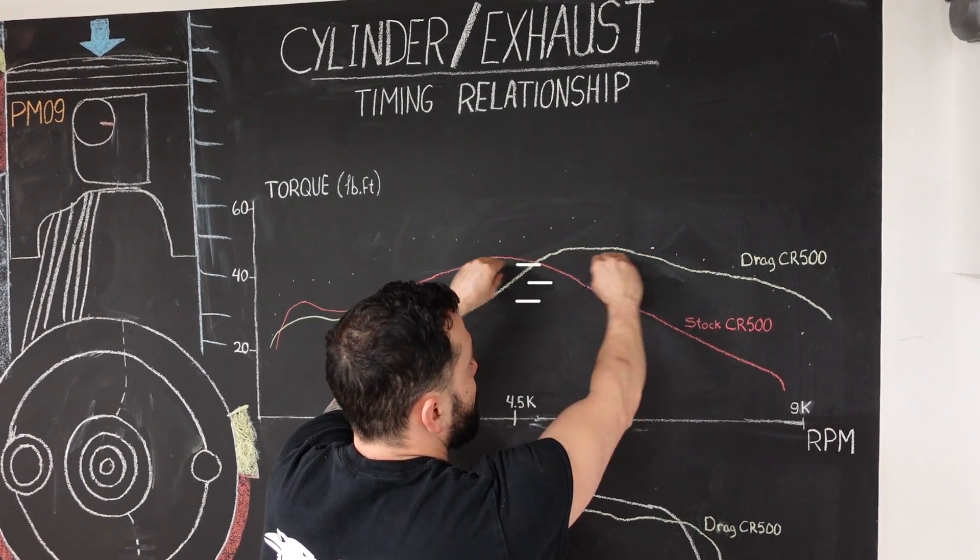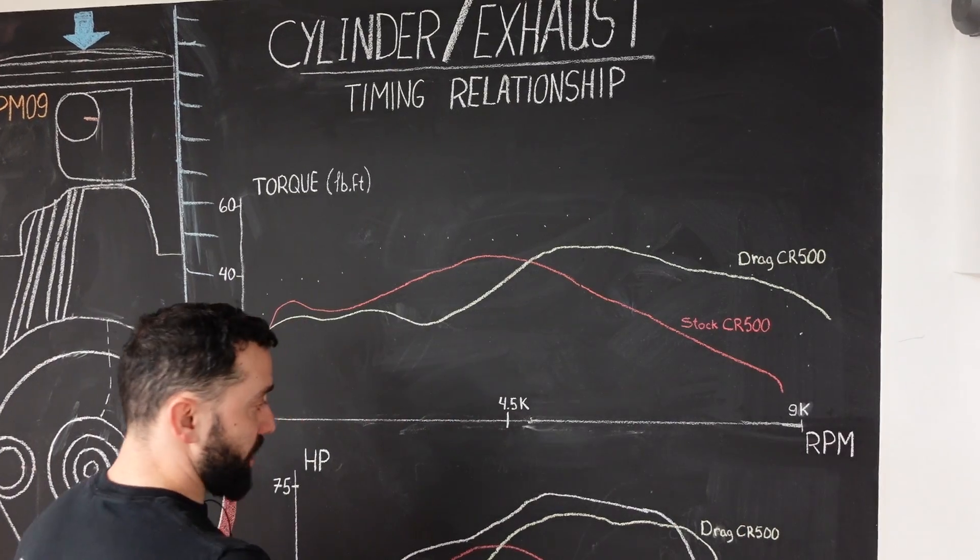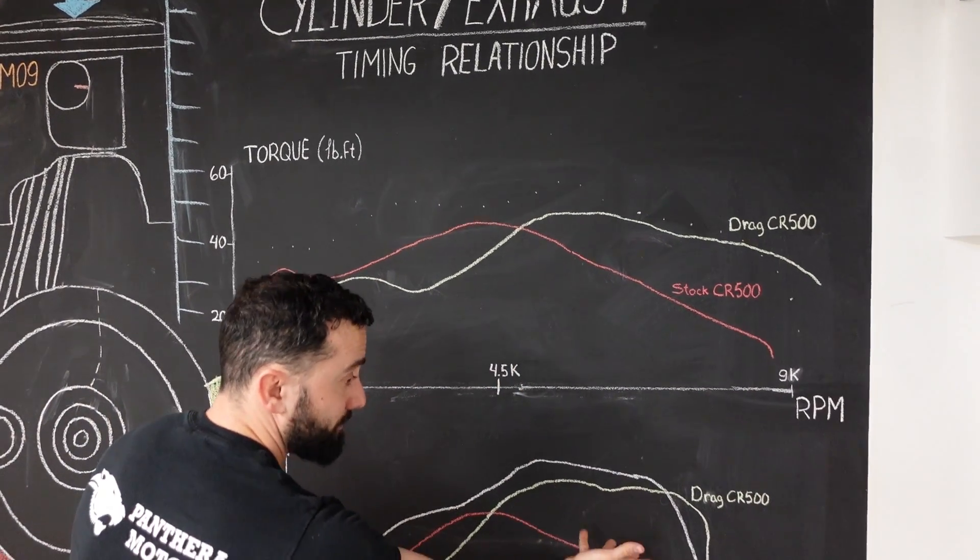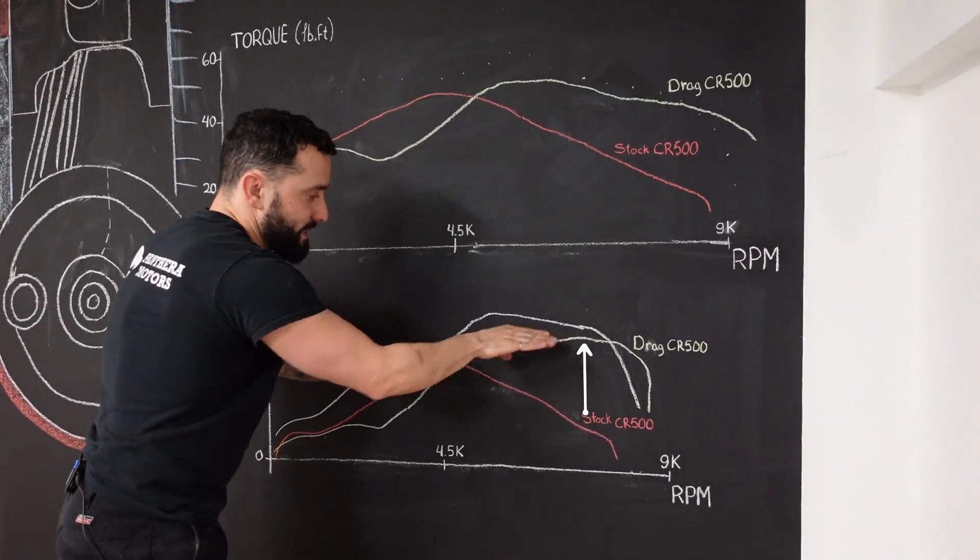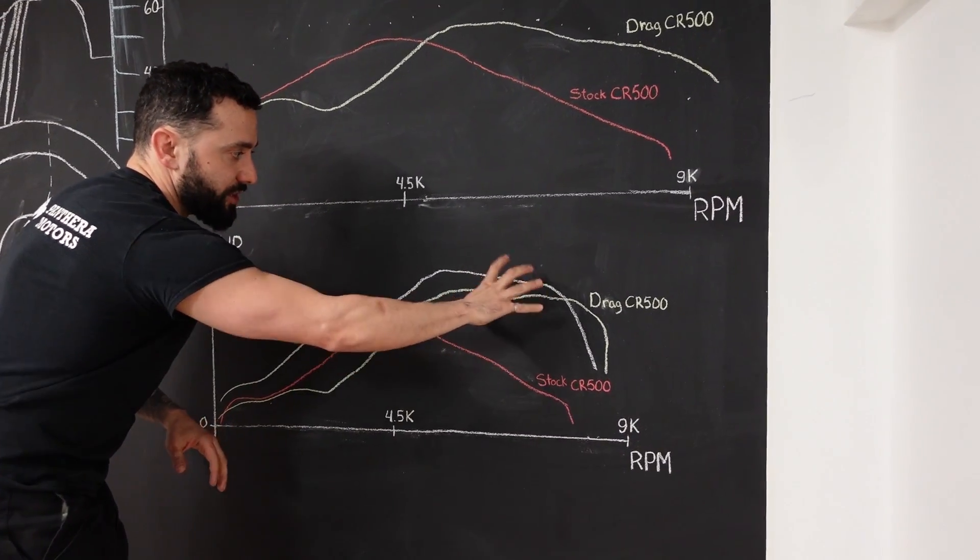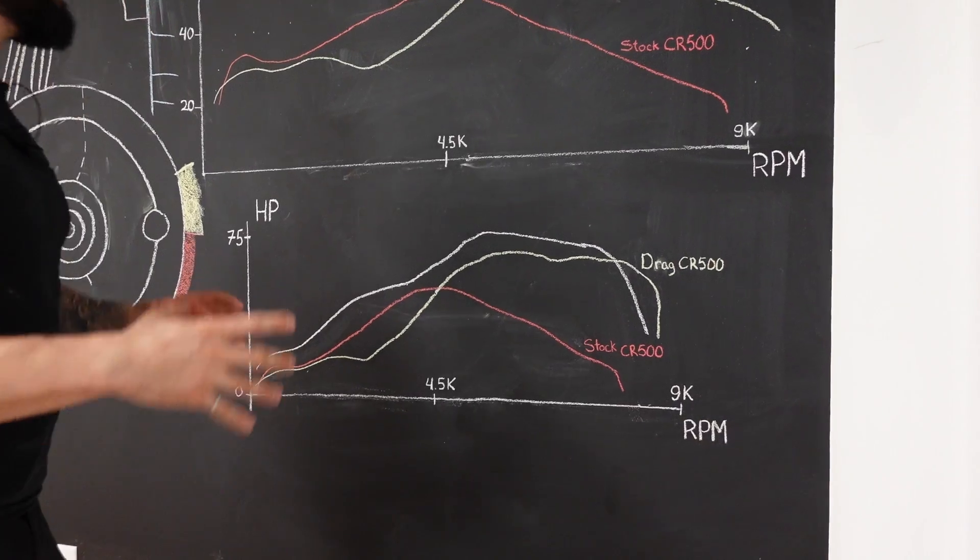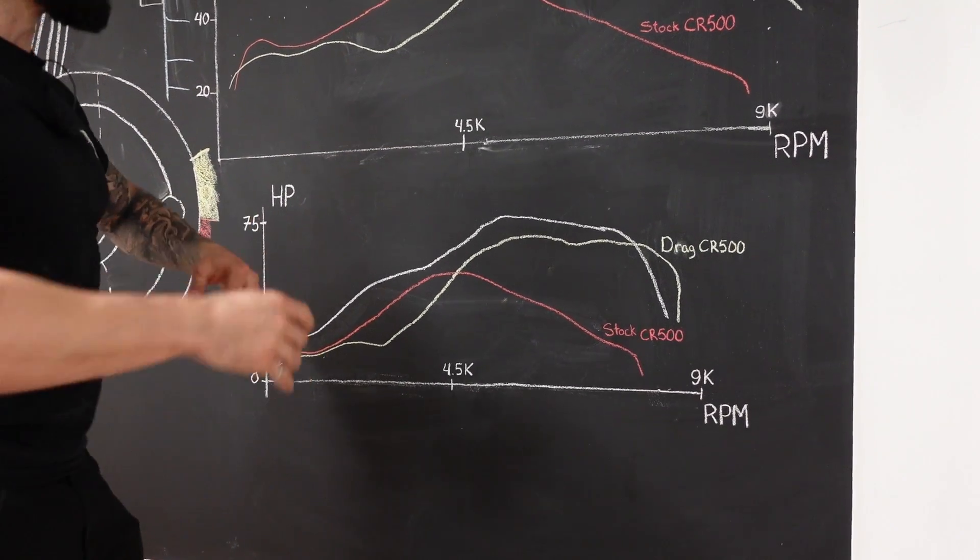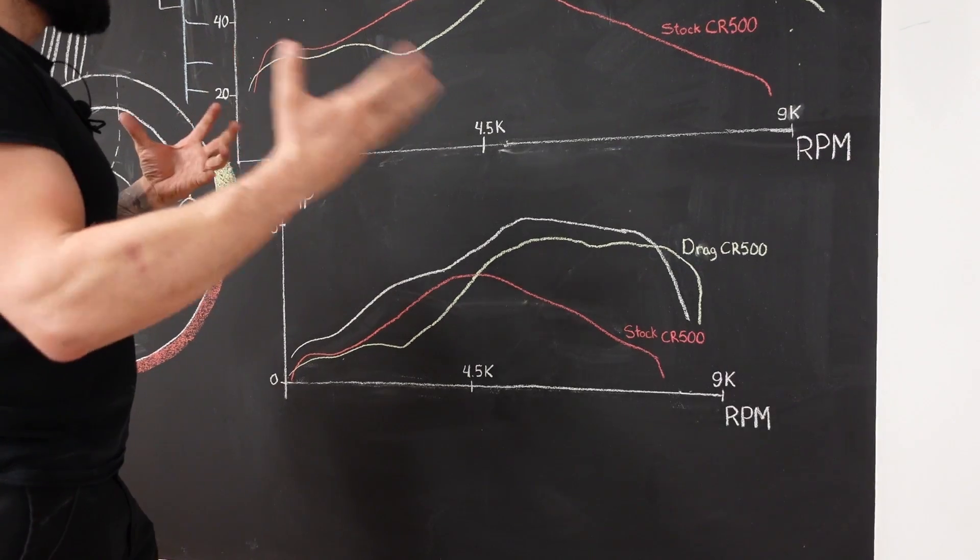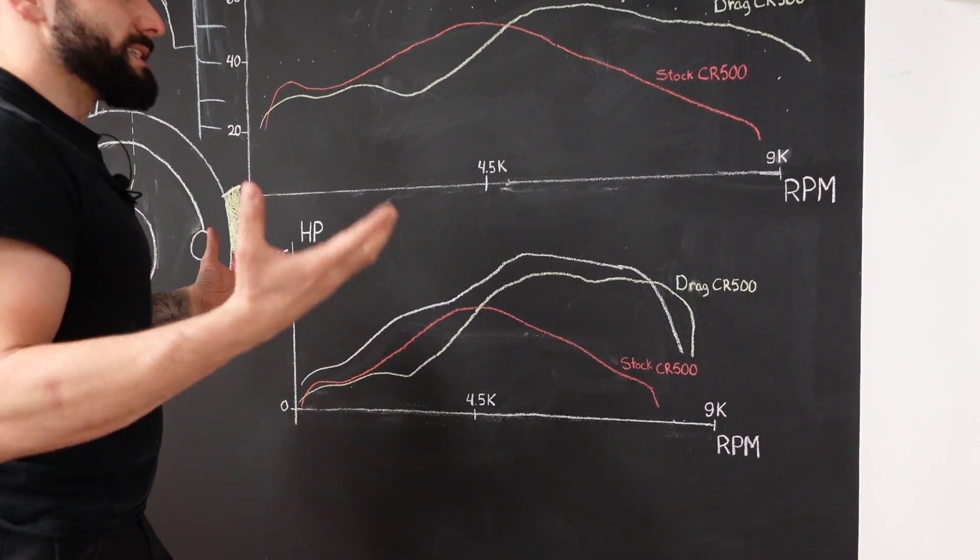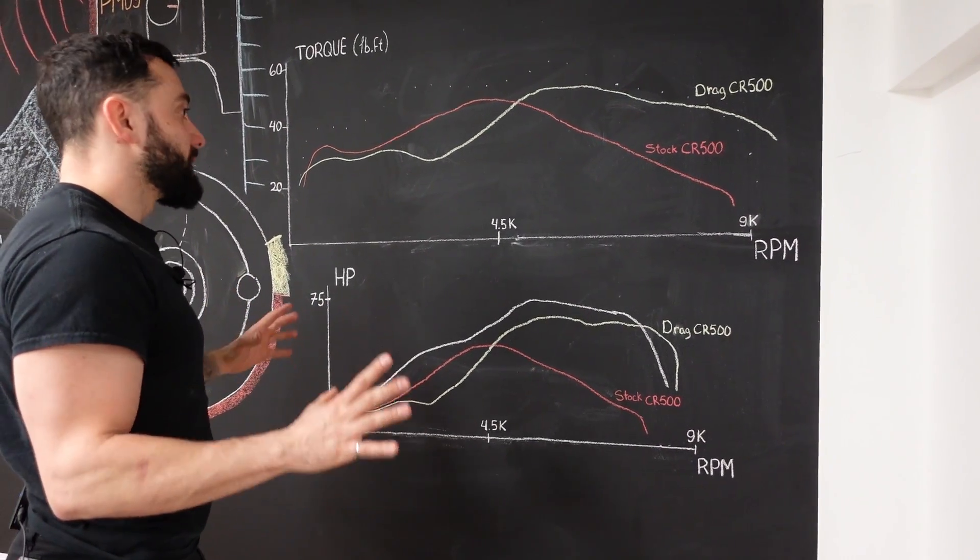Since horsepower is, like we said, torque times the RPM, it did increase the horsepower quite a lot. So the numbers are much, much bigger. Completely two different setups, completely two different bikes to ride. They cannot be used in all situations, it's either one or the other.